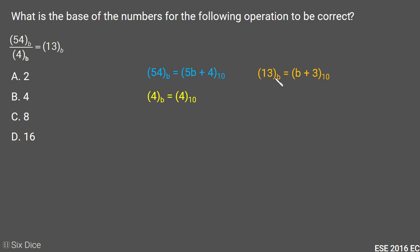Similarly, 13 in base b will equal b plus 3 in decimal, and 4 in base b is the same as 4 in decimal.